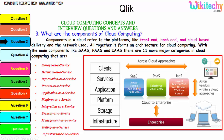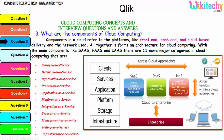Software as a Service examples include App Engine, Google, and Maso. Platform as a Service examples are Gmail, Glyphi, and Salesforce. Infrastructure as a Service providers include Amazon Web Services, Advanix, Excalibur, Akamai, and Joint, among others.